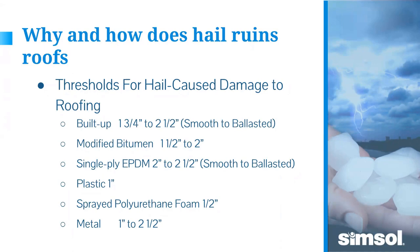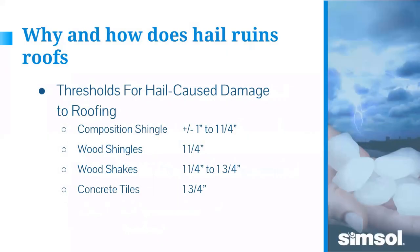For metal roofing, about one to two and a half inches — one inch can cause damage to unsupported metal like a chicken house over two-by-four purlins, versus fully supported metal on plywood. For residential composite shingles, about one to one and a quarter inches, depending on type. Laminated 30- to 40-year shingles are on the higher end around one and a quarter inches; three-tab shingles closer to one inch. Age and condition matter: a newer three-tab may need one and a quarter inches to show damage.